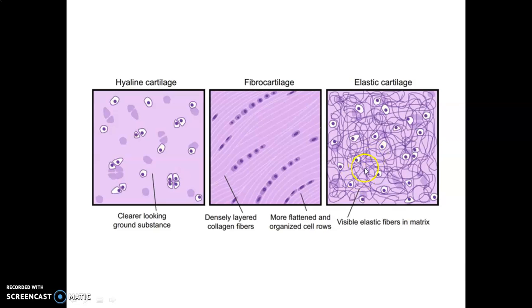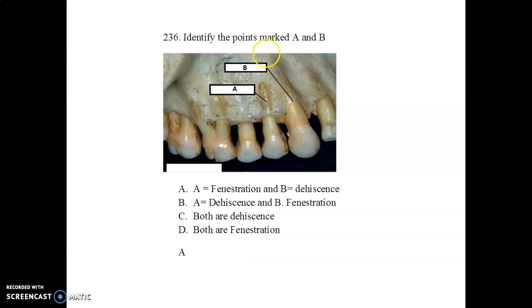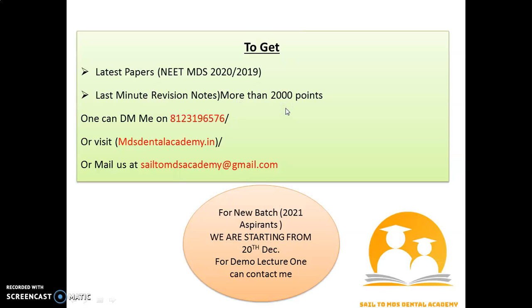The next appliance shown is the Frankel 3 appliance, which is a removable myofunctional appliance. In the final image, points A and B are identified: A indicates fenestration and B indicates dehiscence.